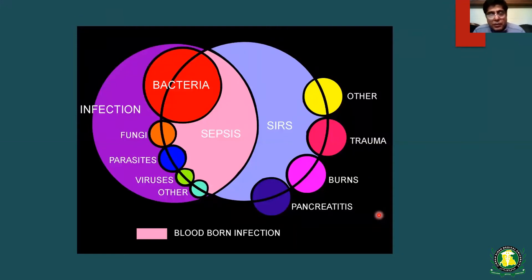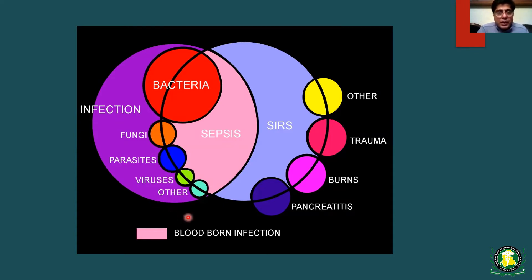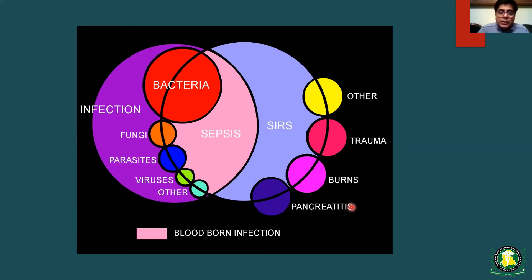A Venn diagram illustrates the relationship: infection can be caused by bacteria, fungi, parasites, or viruses. If you meet the definition of SIRS in the presence of infection, then you have sepsis. If you have SIRS due to other causes such as trauma, burns, or pancreatitis — that is SIRS secondary to non-infectious causes, not sepsis.